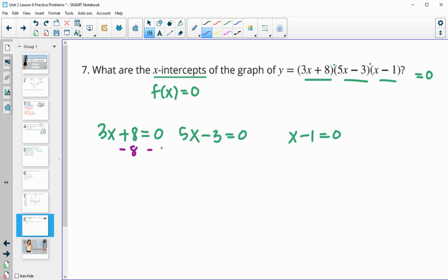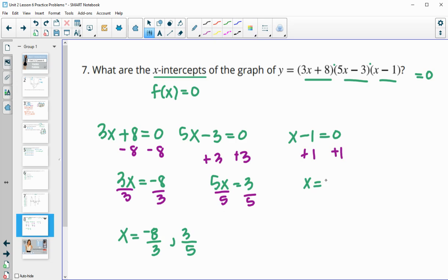We're going to subtract 8 from both sides here. So then we get 3x is equal to negative 8. And then you can divide by 3. And we get x equals negative 8 thirds as one of our zeros. This next one will add 3 to both sides. And then we get 5x equals 3. Divide both sides by 5 to get x by itself. And we will end up with 3 fifths as our second zero. And then for this one, we'll add 1 to both sides. And we end up with x equals 1 as our third zero. So here's all three zeros.